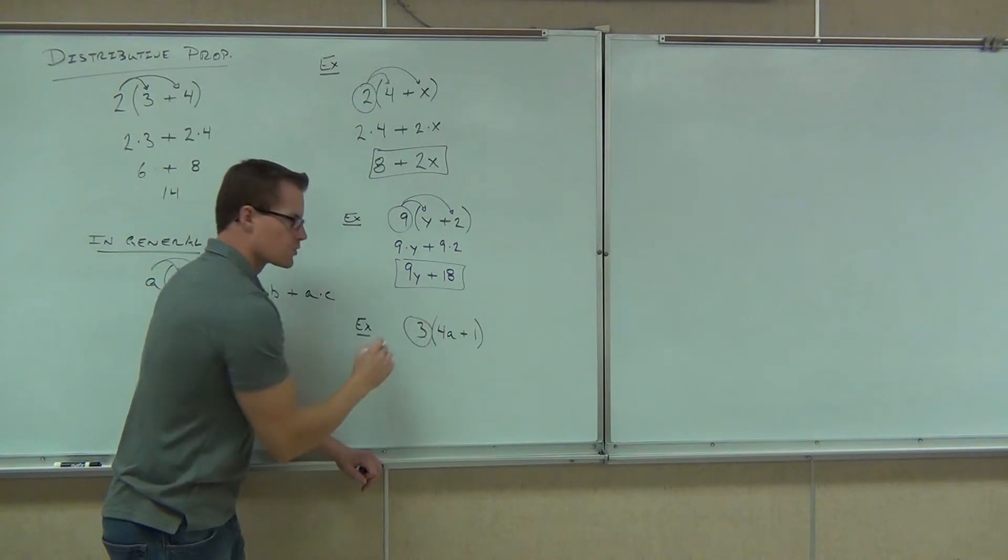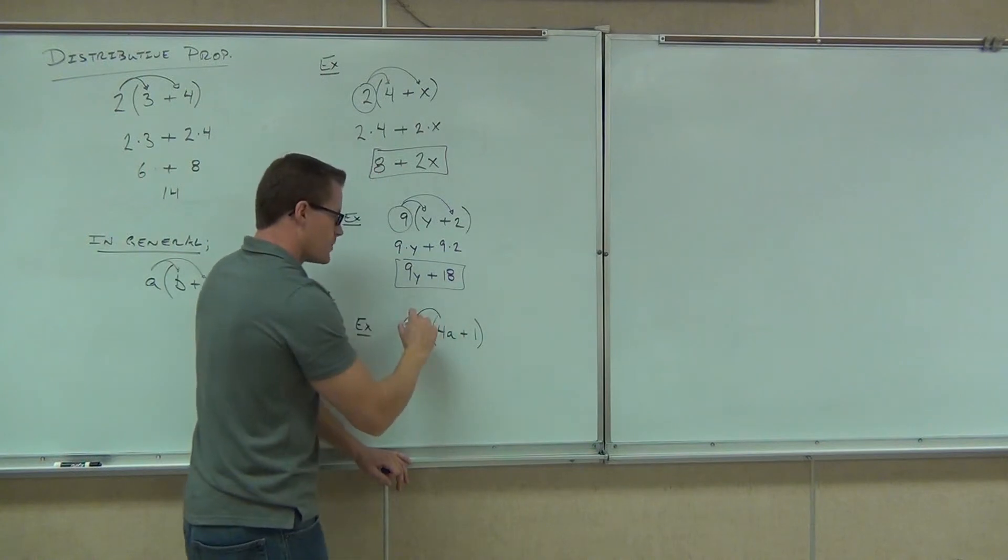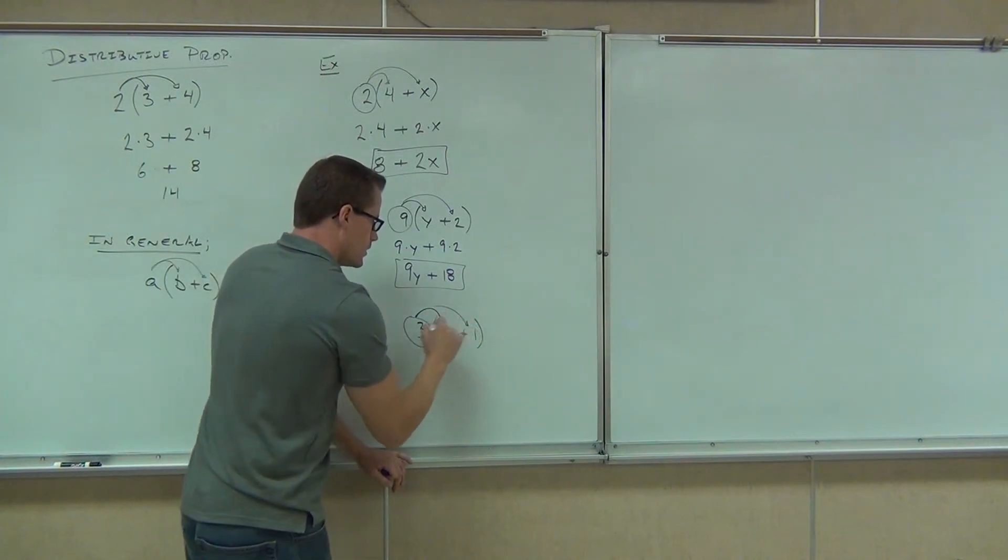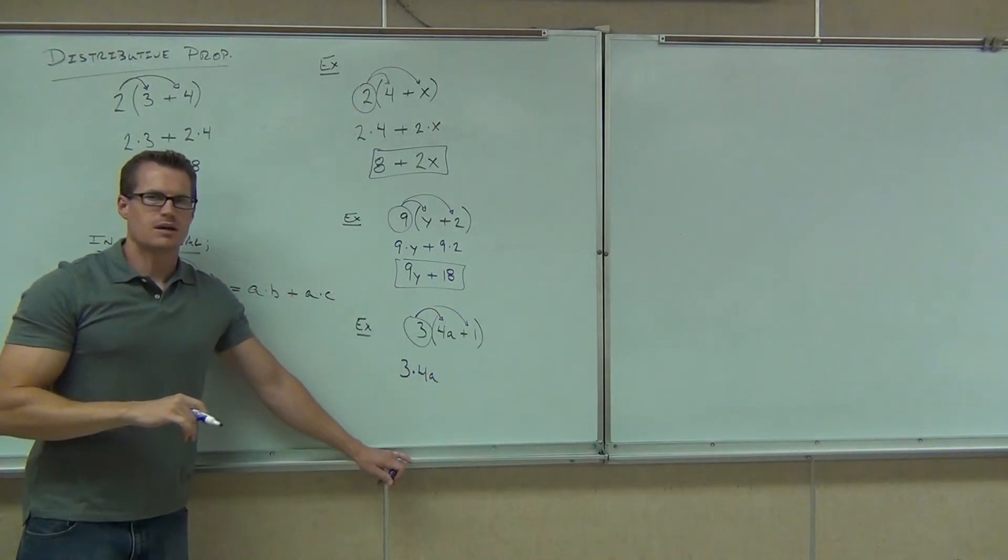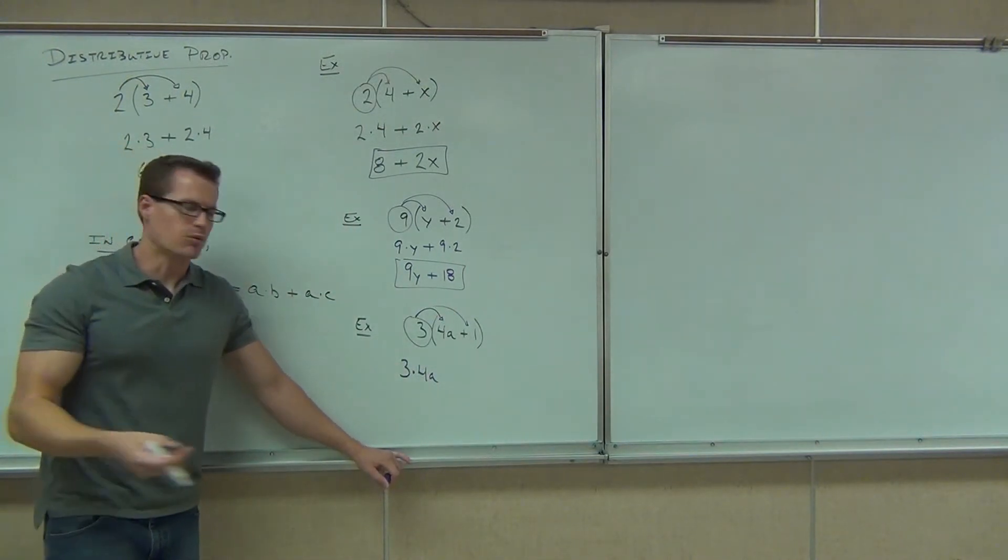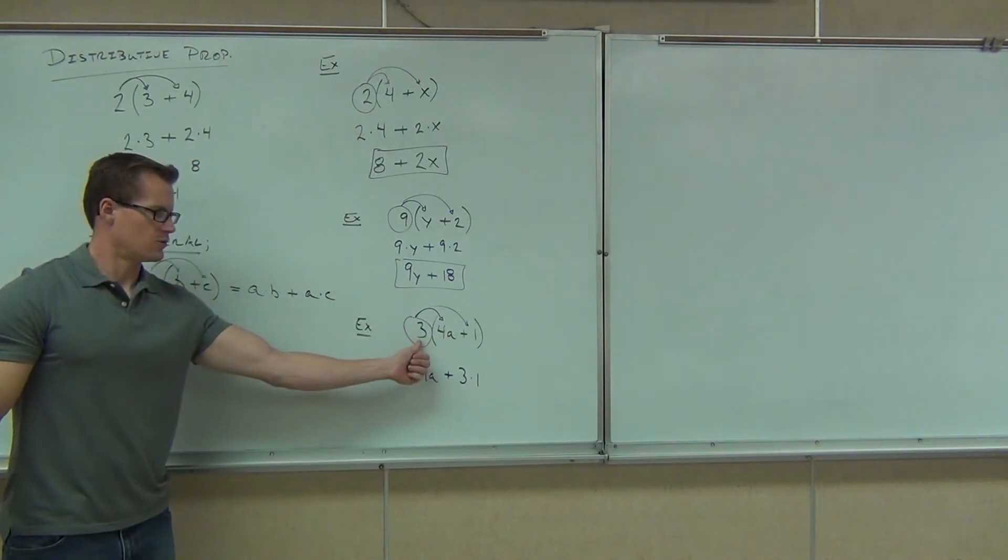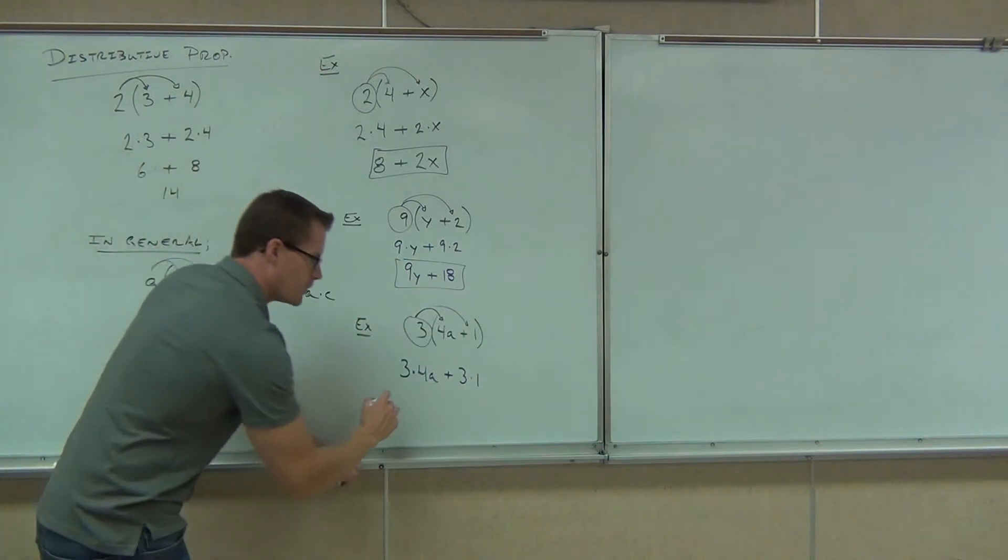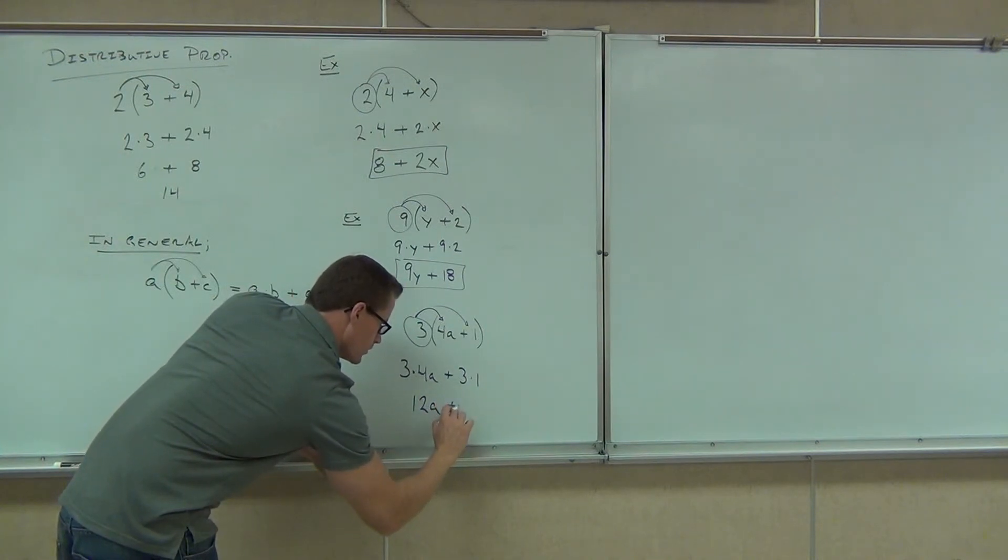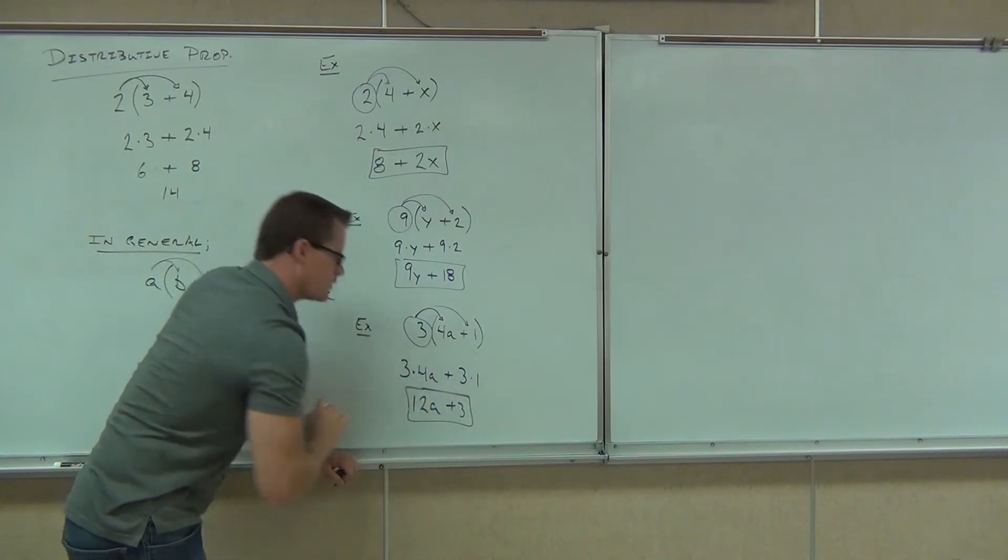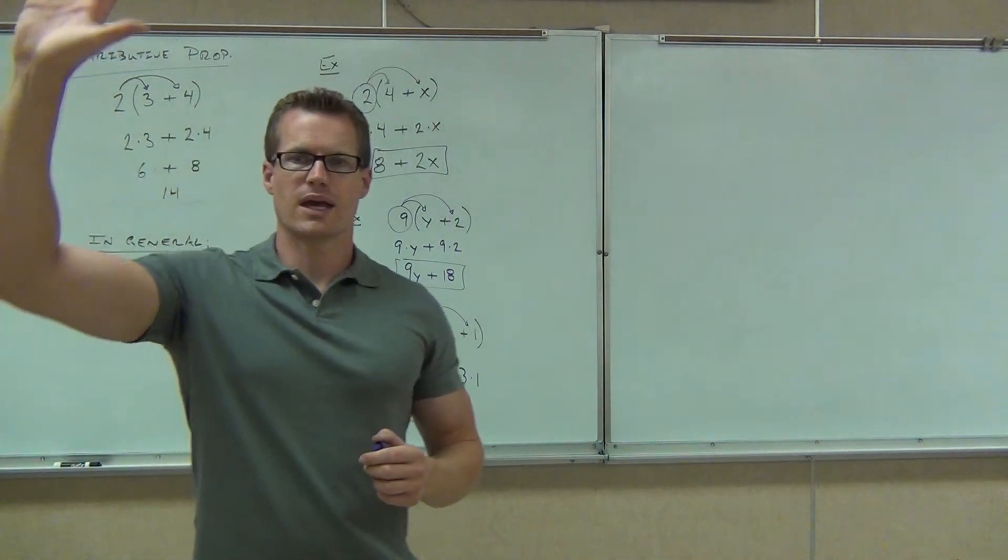Okay, last one I have up here. We'll circle the three. We'll circle that number with the sign in front of it. Now, of course, it's positive so it doesn't have a sign. We'll multiply that by both of them. So, the first thing we should get is three times 4a. Do you have three times 4a? Yes. Now that we know how to multiply those, that's not our problem. And then we'll have our plus sign, three times one. We'll just take our factor out here times our term in there. And we'll get 12a and three. Plus three. Good. They're not like terms. You can't combine them. You're done.